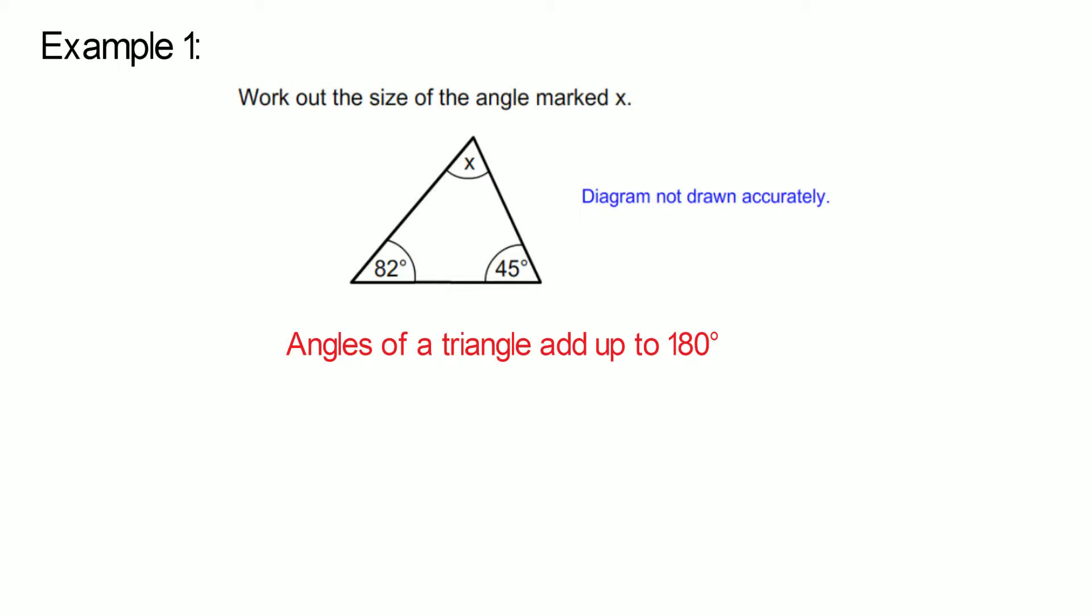Let's look at some examples. Example one, in the given triangle, work out the size of the angle marked X. We know that angles in a triangle add up to 180 degrees. Therefore, X plus 82 degrees plus 45 degrees equals 180 degrees. If we simplify, X plus 127 degrees equals 180 degrees. X equals 53 degrees.